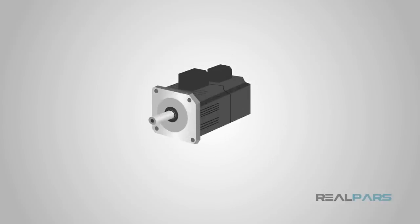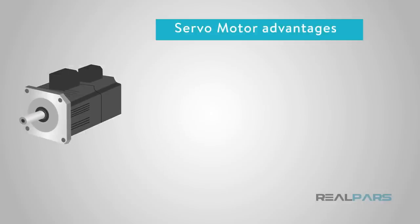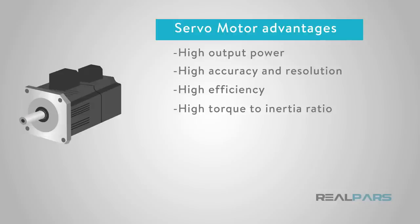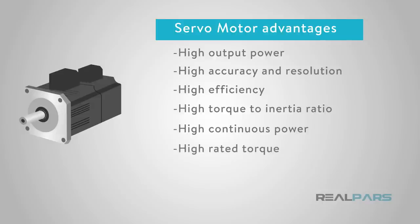Now, let's summarize the top servo motor advantages and disadvantages. Top servo motor advantages are: high output power relative to motor size and weight; encoder determines accuracy and resolution; high efficiency — it can approach 90% at light loads; high torque to inertia ratio — servo motors can rapidly accelerate loads; has 2 to 3 times more continuous power for short periods; has 5 to 10 times more rated torque for short periods; servo motors achieve high speed at high torque values; quiet at high speeds; and encoder utilization provides higher accuracy and resolution with closed-loop control.